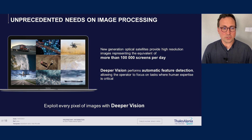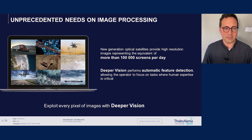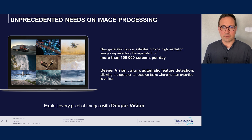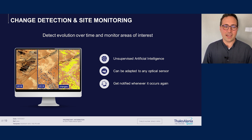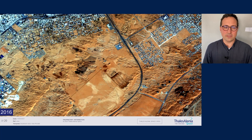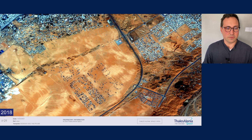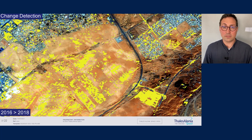As you may know, the latest generation of Earth Observation satellites capture enough images each day to fill more than 100,000 computer screens. Deeper Vision performs automated content extraction from images and enriches image data so the user can request images from given content and focus on tasks where human expertise is really critical. The application we will see today is called Change Detection and Site Monitoring. Every time a new image arrives on a given area, Deeper Vision will compare it with the latest previously acquired image and highlight places that changed significantly. For instance, on this region of the Middle East, we have two images taken by the European Space Agency satellite Sentinel-2 — one from 2016 and one from 2018 — and we can see that volume of Earth has been removed in parts of the desert, and some new buildings appeared, and there are also new roads.